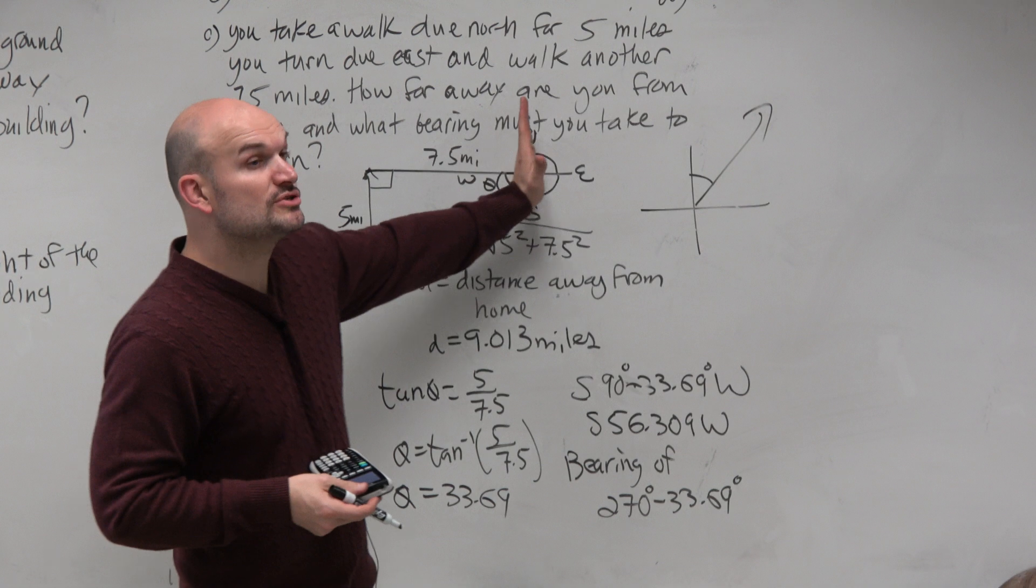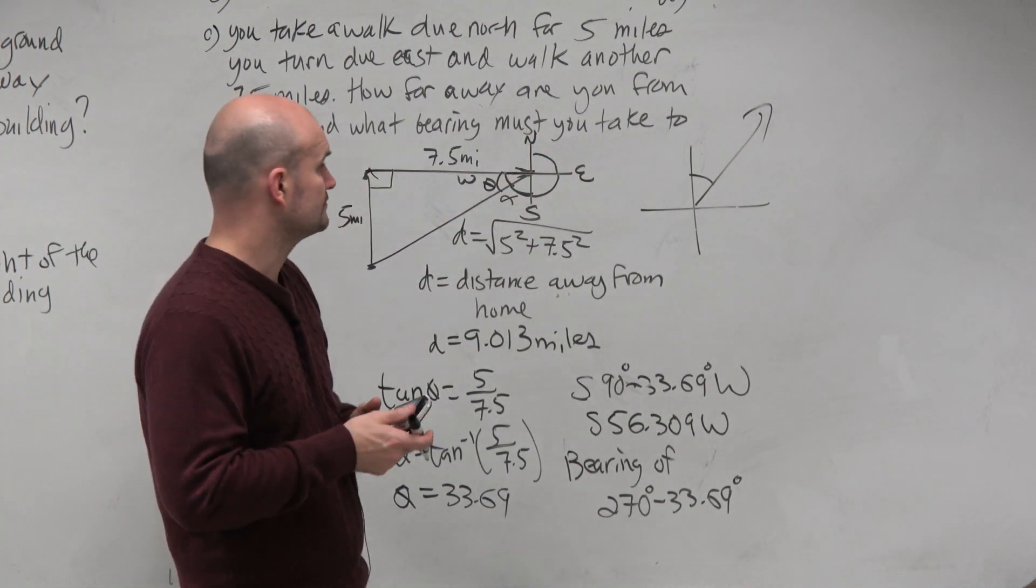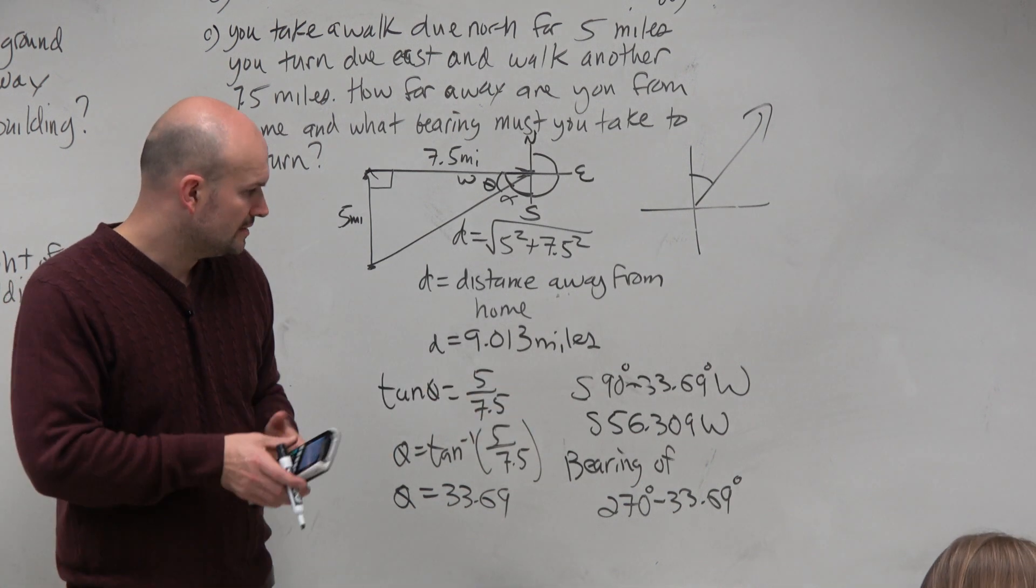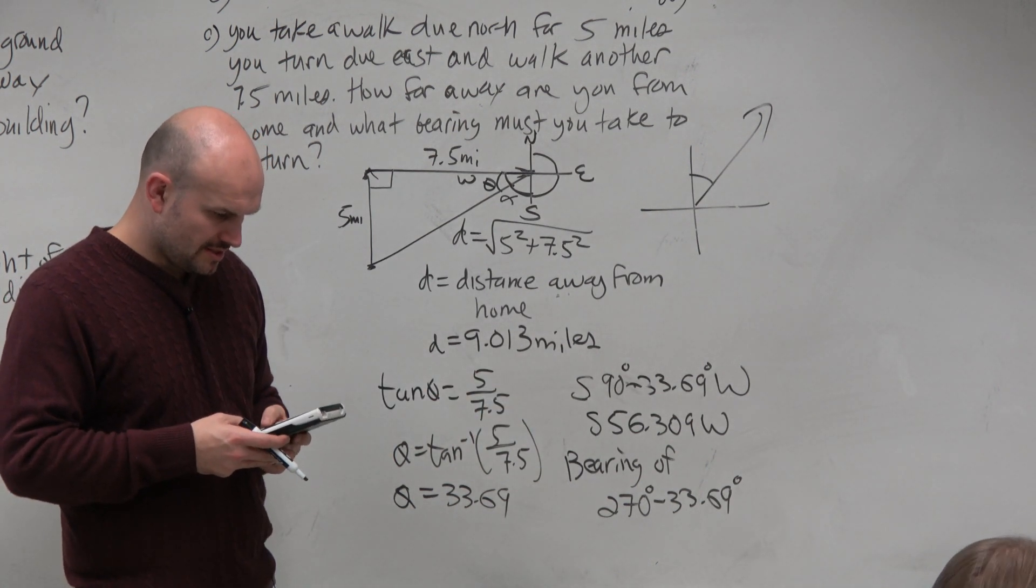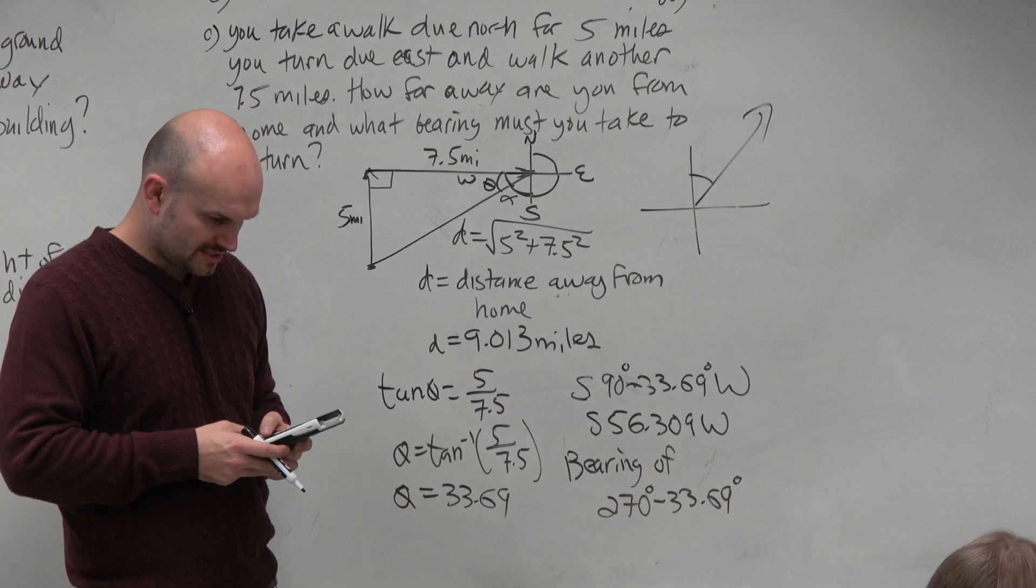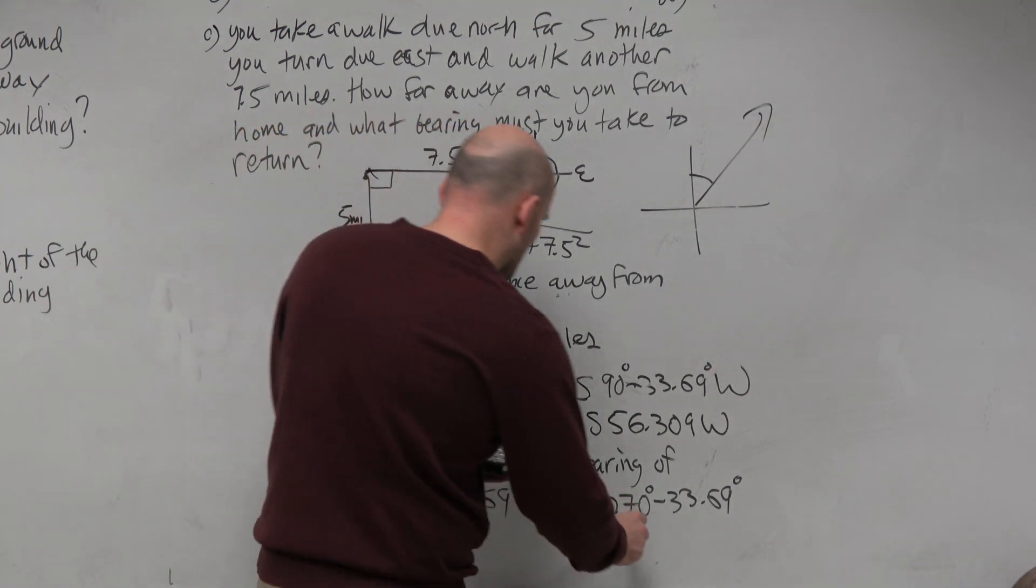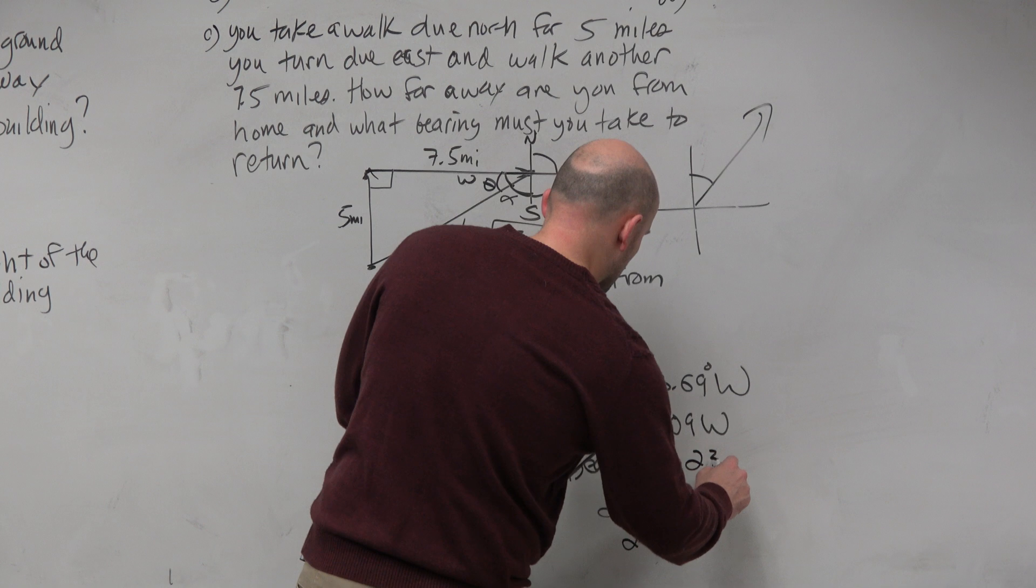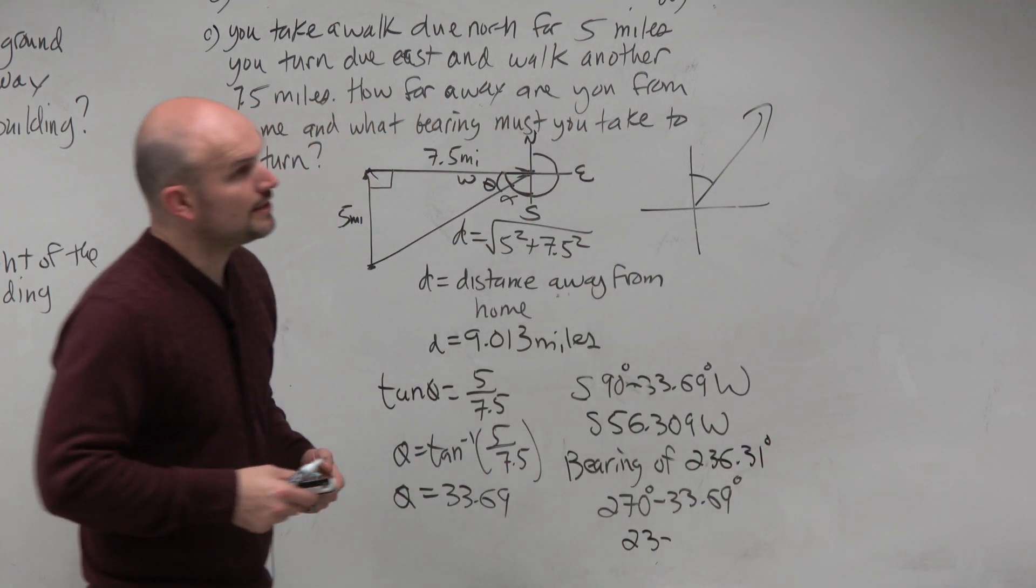Basically, yeah. From due north, right? Or if you're going to do it this way, from the due south, right? And let's just do that. 270 minus 33.69. And that gives me 236 degrees. And there you go.